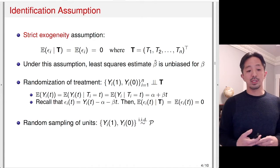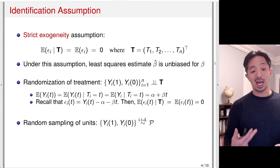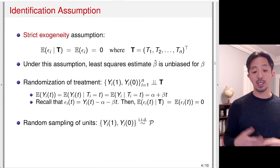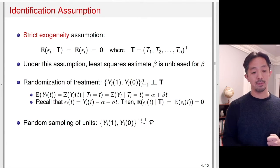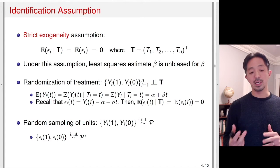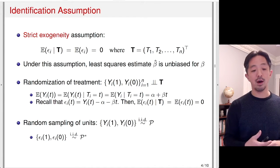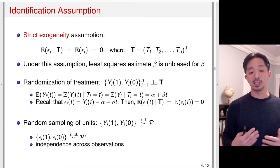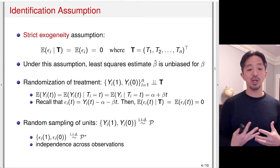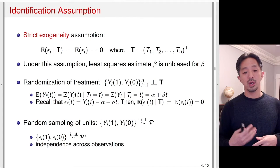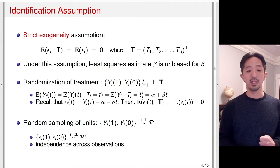We can also think about the random sampling of units in the experimental design. This means the potential outcomes are independently and identically distributed from some population p. In other words, the potential error terms epsilon of 1 and epsilon of 0 are iid from some population. This also implies independence across observations. So random sampling of units and randomization of treatment — which are parts of the study design — are related to the assumptions commonly made in the linear regression context.